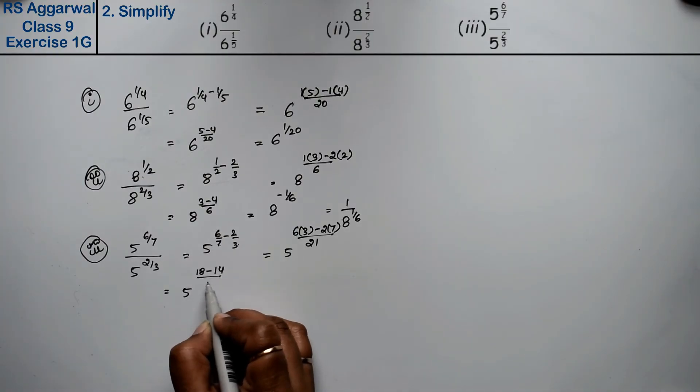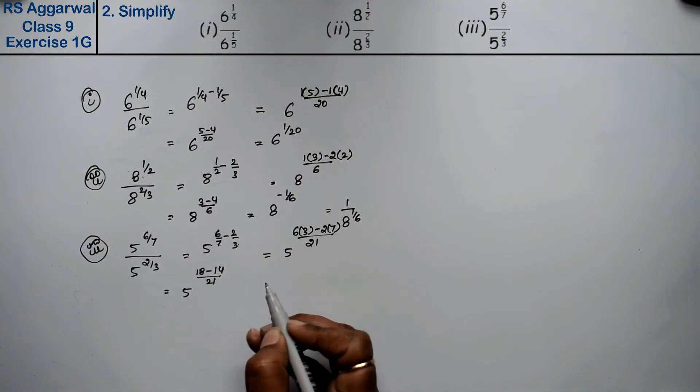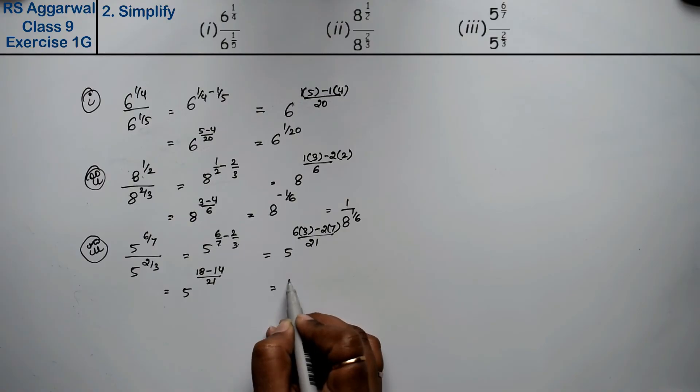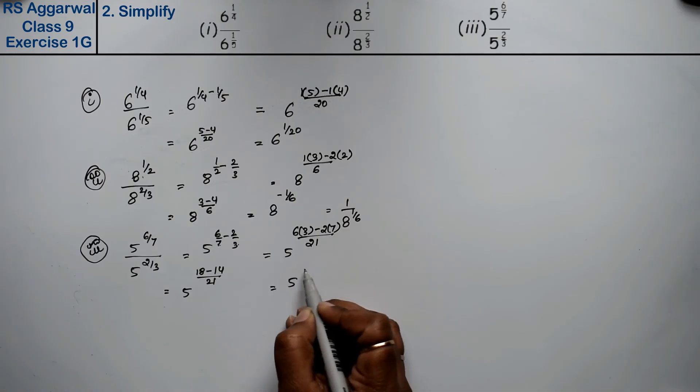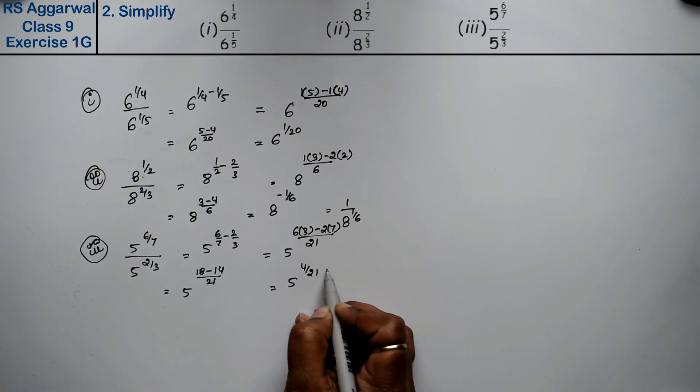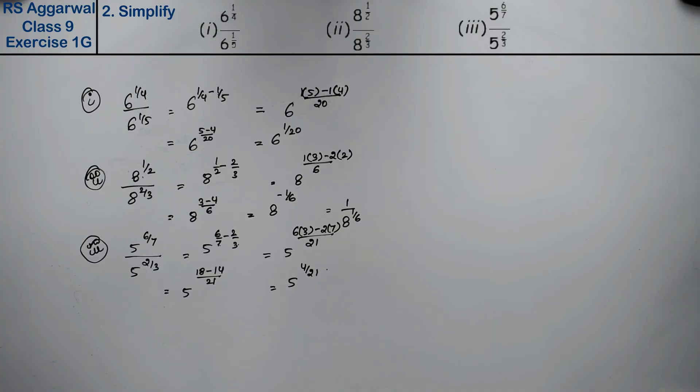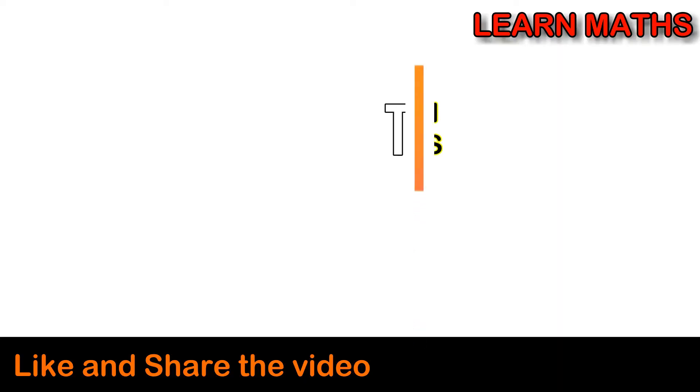Toh five ki power kya aa gayi — four upon twenty one is the answer.